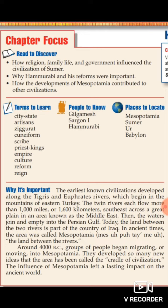Now, why this civilization is important — I will just read it out to you. The earliest known civilizations developed along the Tigris and Euphrates Rivers, which began in the mountains of eastern Turkey. The twin rivers each flows more than 1,000 miles or 1,600 kilometers southeast across a great plain in an area known as the Middle East. Then the waters joined and emptied into the Persian Gulf. Today, the land between the two rivers is part of the country of Iraq. In ancient times, the area was called Mesopotamia.